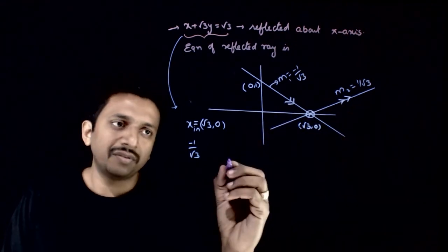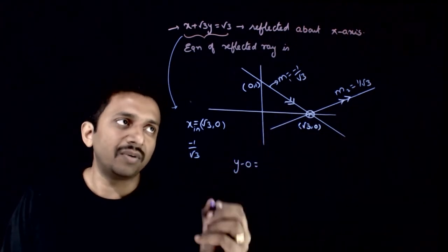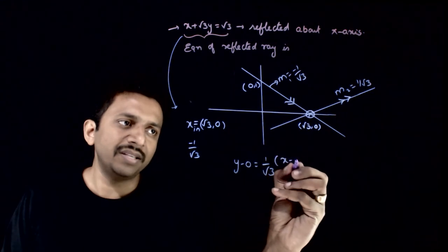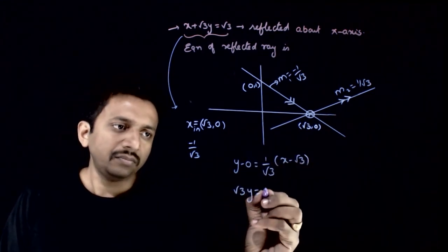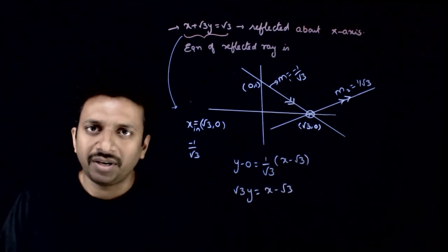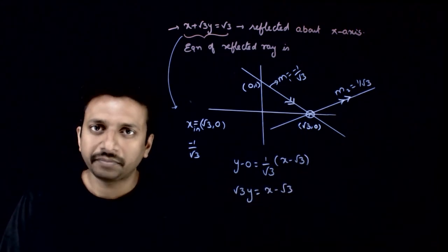If you want the equation of this, you get y minus 0 equals 1 by root 3 times x minus root 3. So root 3 y equals x minus root 3 is the answer. Thank you.